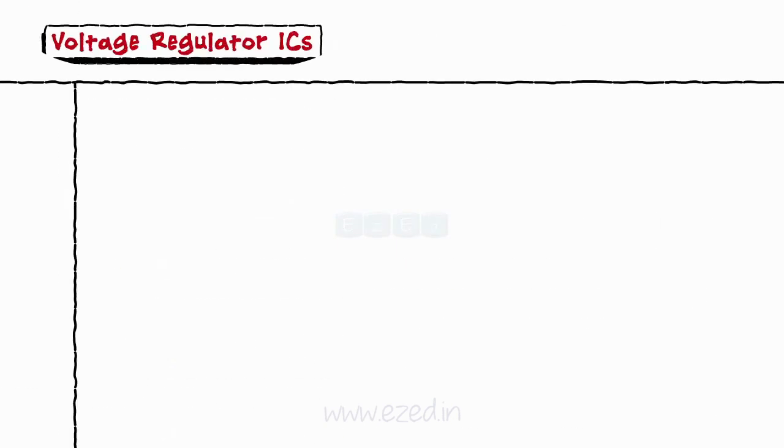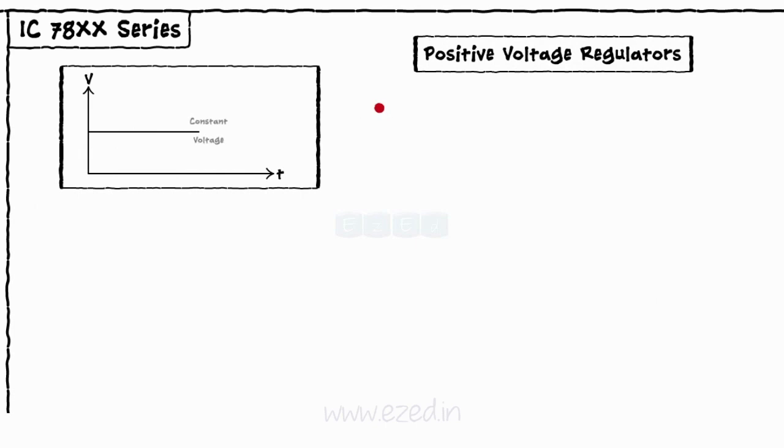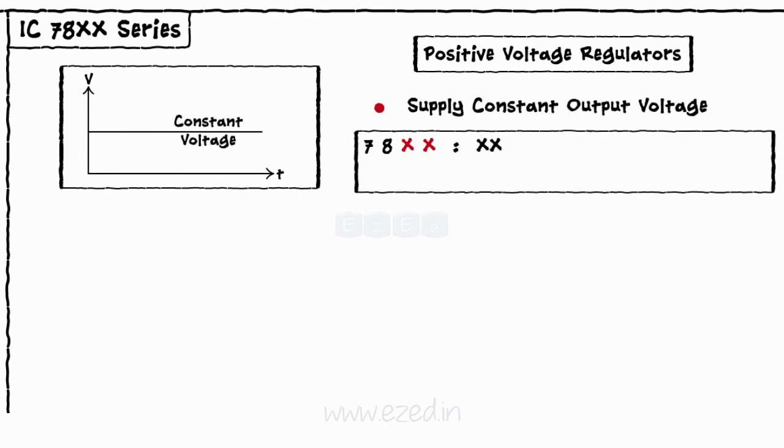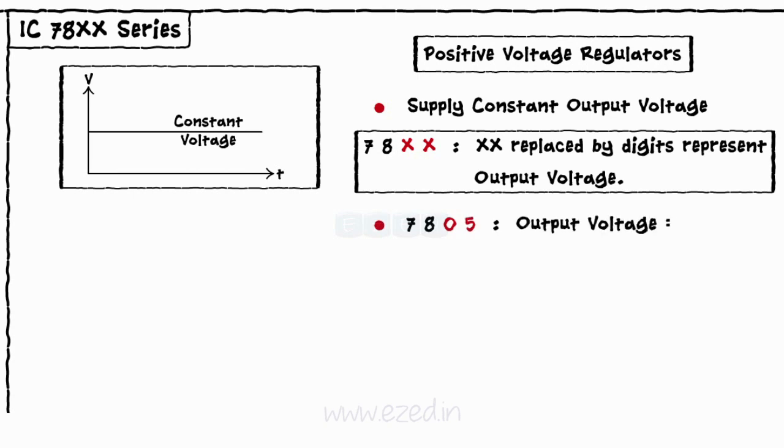Let's start with the series of 78XX ICs. These are used as positive voltage regulators and supply a constant output voltage. The last two XX when replaced by digits represent the output voltage. For example, IC7805 will produce an output voltage of 5 volts. IC7812 will produce an output voltage of 12 volts.